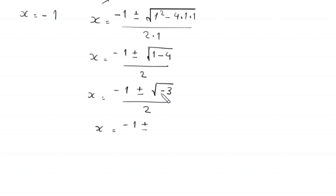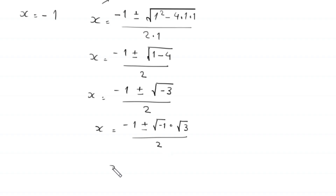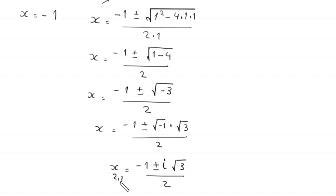So x is equal to negative 1 plus or minus the square root of negative 3, which can be written as square root of negative 1 times square root of 3, divided by 2. And x is equal to negative 1 plus or minus i times root 3, divided by 2. This is the second and third value of x, and the first value of x is equal to negative 1.